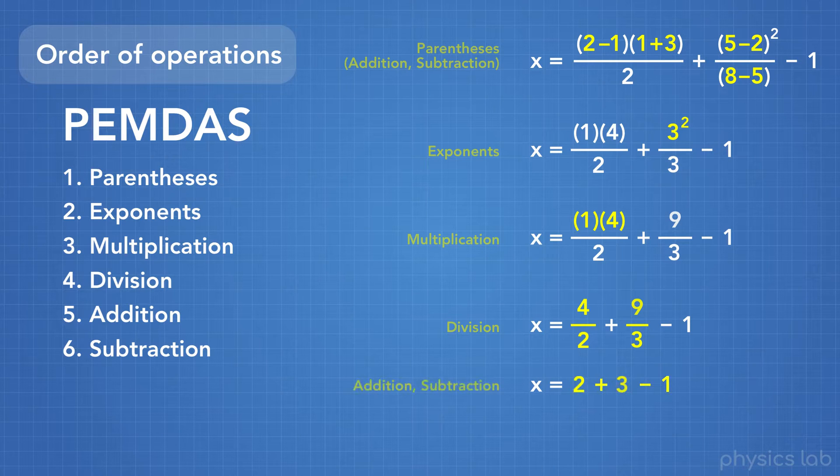And now all we have left to do is addition and subtraction, which we can do together. So 2 plus 3 minus 1 becomes 4. And there we go. We took that big bunch of math up there and simplified it down to get 4. And anyone else who sees that same bunch of math and simplifies it down will get the exact same answer, as long as they use the order of operations.